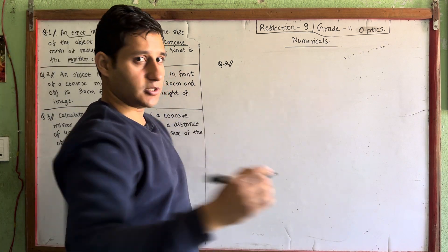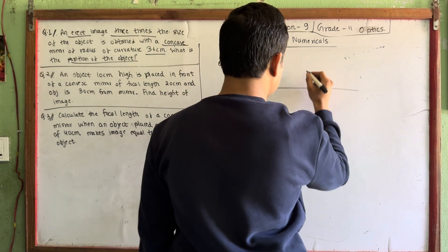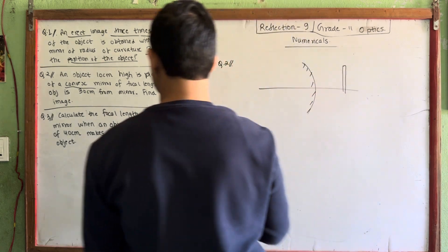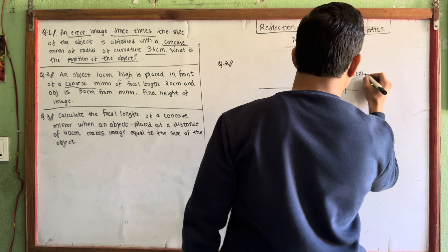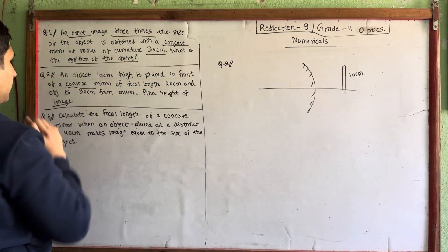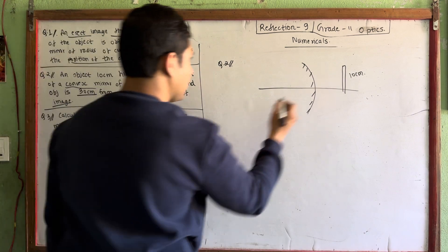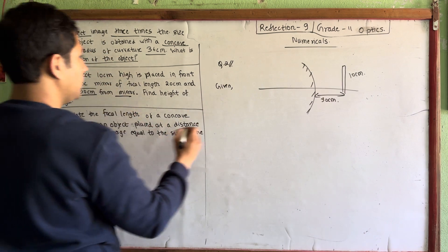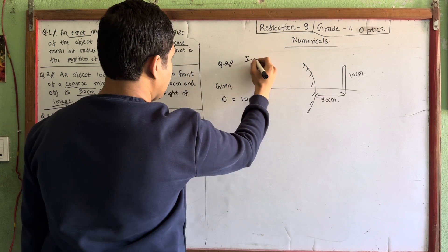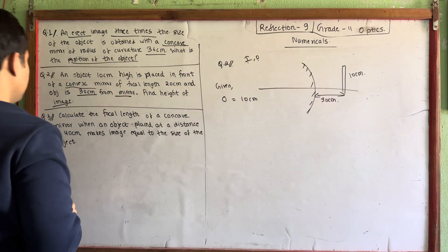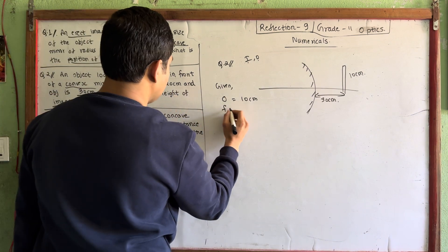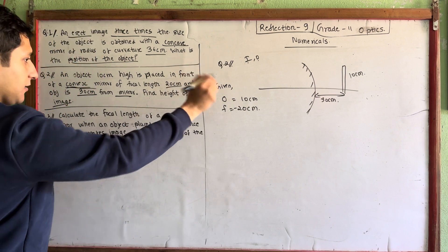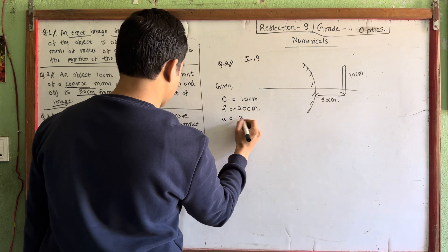Now, the mirror is convex. The height of the object is 10 cm. The focal length is 20 cm. The object distance u is 30 cm. We need to find the height of the image.